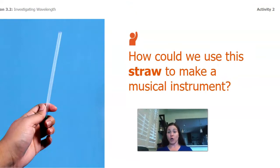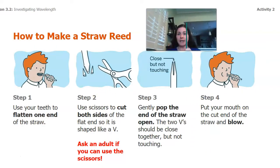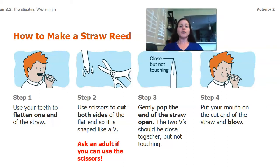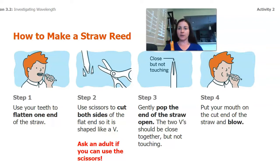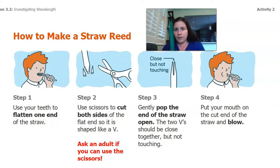We can use a straw to make a musical instrument. Here's how we do it: we're going to take a straw and use our teeth to flatten one end. Make sure you wash your hands first because we need to be careful about germs, bacteria, and viruses. Then once you've asked an adult for permission, you're going to take your scissors and cut the ends of the straw into a V shape. I just flattened my straw and went snip, snip — now I have this V. I want those two little pieces close together but not touching. Then I'm going to put my mouth on the cut end — the pointy end — and blow.